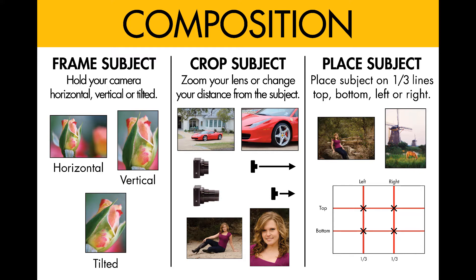To crop your subject, zoom your lens or change your distance from the subject. You can see the picture of the car here — it's showing a lot of space around the car and then zoomed in for just a section of the car. With the picture of the person, you can see it's full length and then zoomed in for a head and shoulders. You can do this either by zooming your lens or by moving farther or closer to your subject.